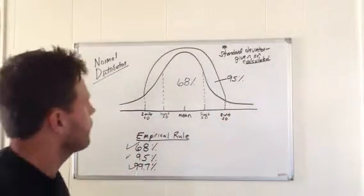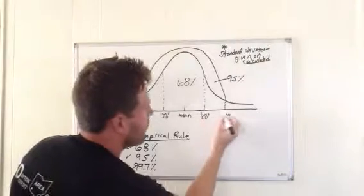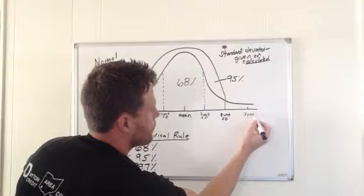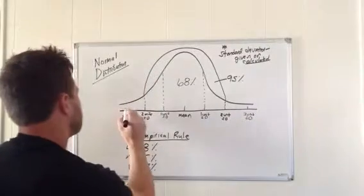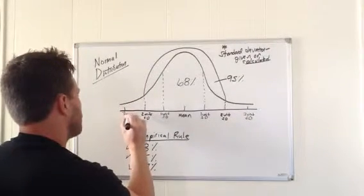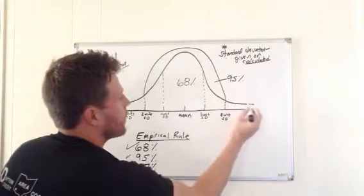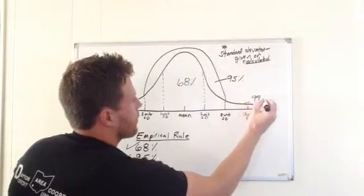Finally, 99.7 is going to be three units of standard deviation. Three units to the right and three units to the left. That represents the 99.7% of the data.